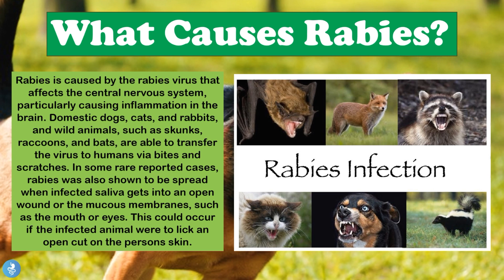The majority of rabies cases are caused by either a bite or a scratch from an infected animal. The animals able to transmit the rabies virus include bats, foxes, raccoons, domesticated cats and dogs, and skunks. In very few reported cases, the disease was also shown to be spread when infected saliva gets into an open wound or an individual's mucous membranes — areas such as the eyes, nose, or mouth — though this is much rarer.